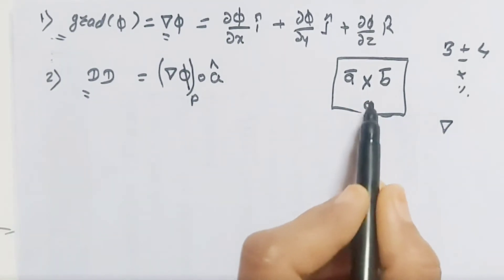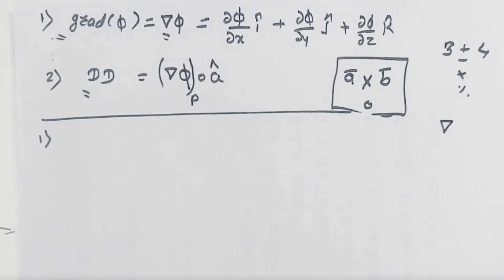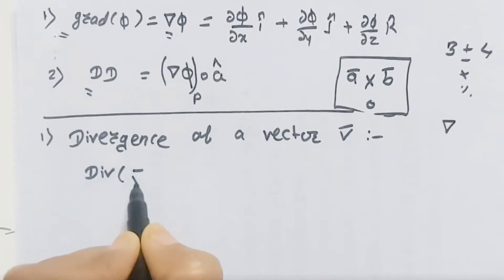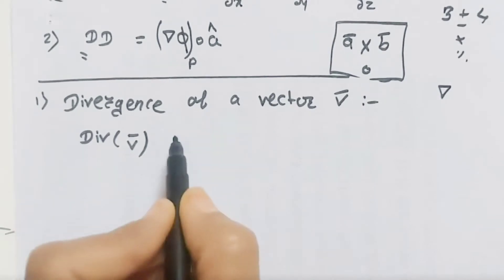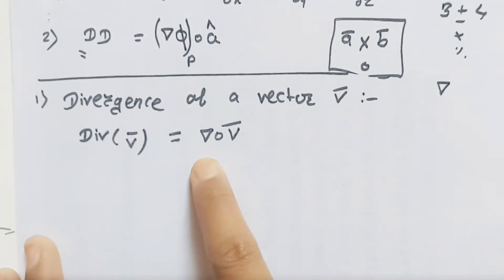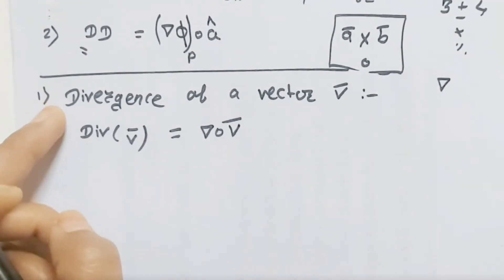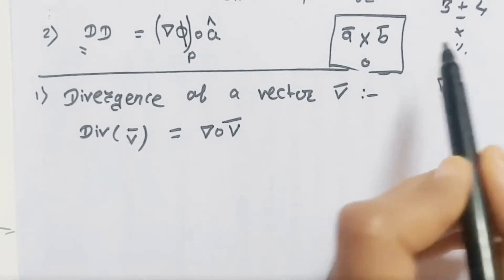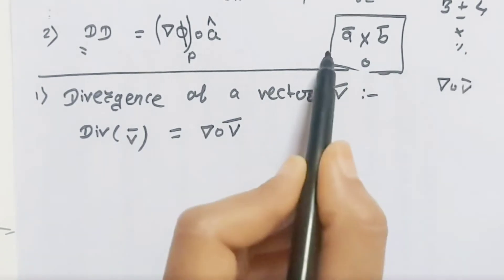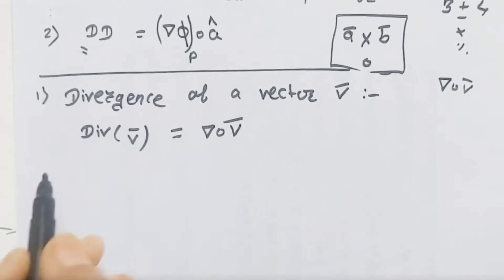Now if the vector differential operator operates on a vector quantity, then obviously there will be either a dot or a cross product. These two operations give two parts: first is the divergence of vector v-bar. Divergence is also written as div of vector v-bar, and it is nothing but delta dot v-bar. When we take delta dot v-bar, that is called divergence, and if we take delta cross v-bar, that is called curl.